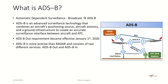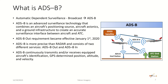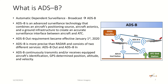ADS-B consists primarily of two different services: ADS-B out and ADS-B in. You can purchase ADS-B out transponders, or ADS-B out/in transponders, or ADS-B receivers. ADS-B continuously transmits or receives an equipped aircraft's identification, GPS-determined position information, altitude, and velocity. ADS-B requires no interrogation signal, which makes it different from usual transponder signals. In general, ADS-B is basically a GPS-based surveillance system, versus the traditional transponder, which is more of a radar-based service for tracking an aircraft's position and velocity.